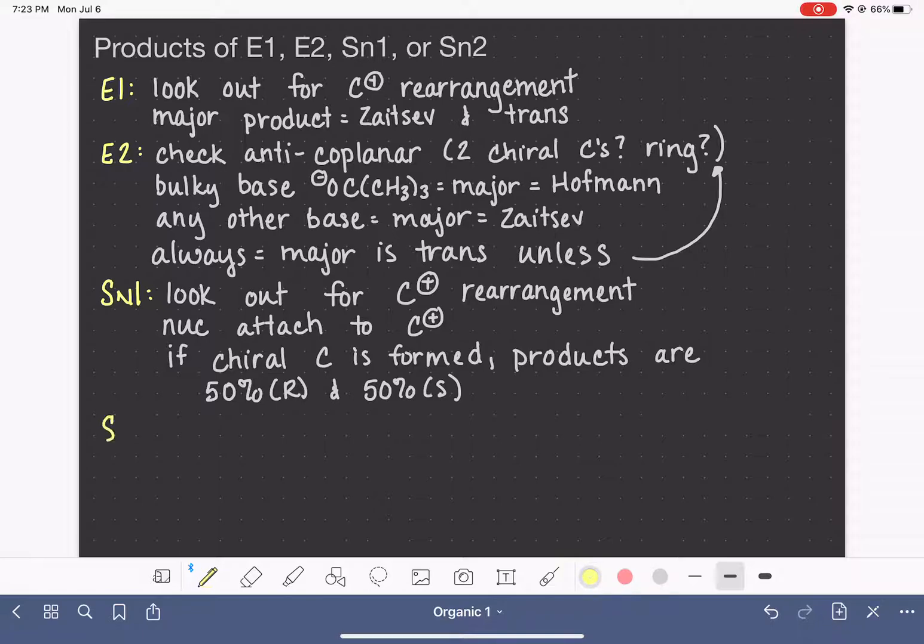For the SN2 reaction, this is where the nucleophile attacks the carbon as the leaving group is falling off. So we don't have any rearrangement. The nucleophile is going to attach itself to the carbon that was holding the leaving group every single time. And if we make a chiral carbon when that nucleophile attaches itself,